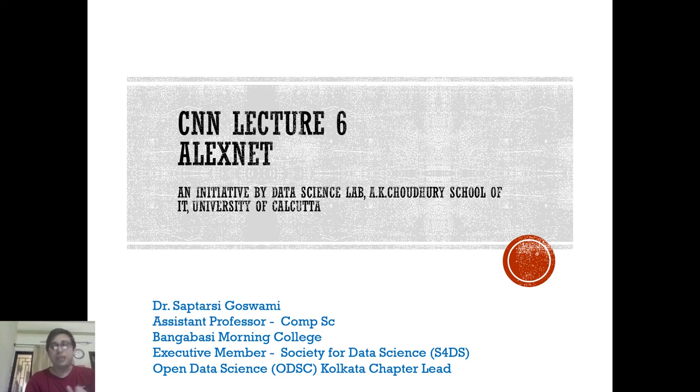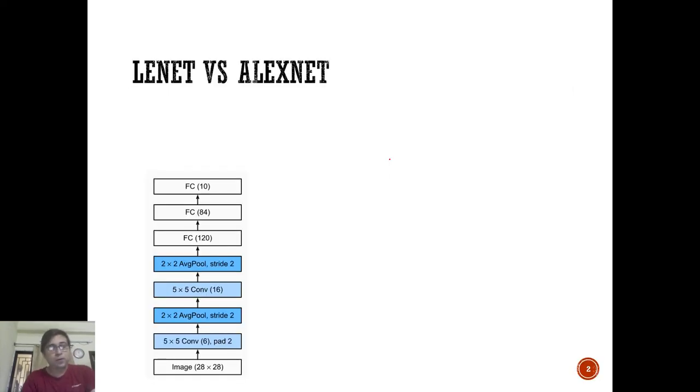We discussed LeNet5, one of the initial and most popular networks. Today we're going to talk about AlexNet, another very popular CNN architecture. Let's do a quick recap of LeNet5, which takes input of a handwritten digit image arranged in rows and columns with pixel intensity values. Then you have convolutional layers that extract features like edges and texture.